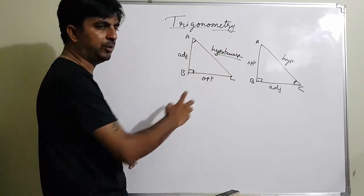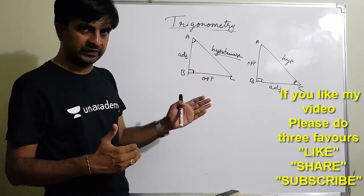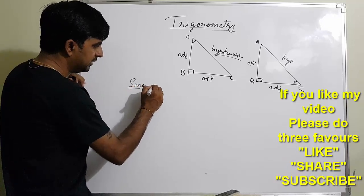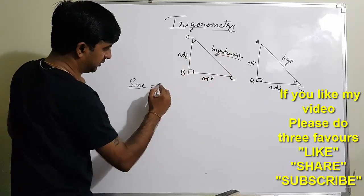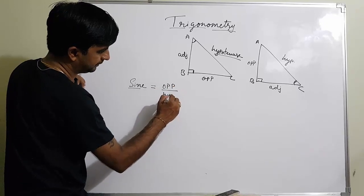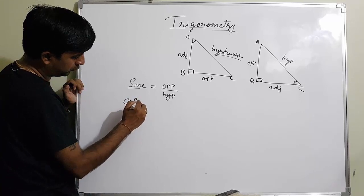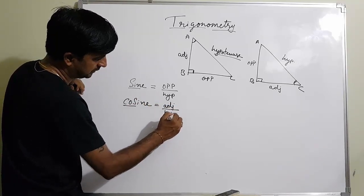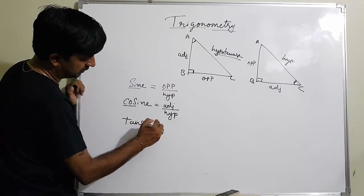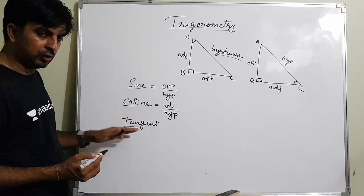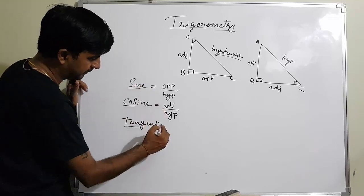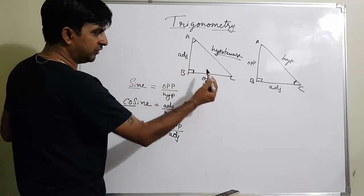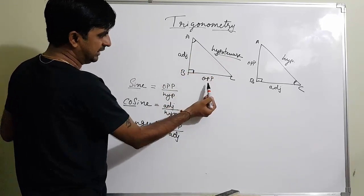They found out six ratios using this right angle triangle, which you need to memorize. The first is sine (sin): sine equals opposite divided by hypotenuse. The second is cosine (cos): cosine equals adjacent divided by hypotenuse. The third is tangent (tan): tangent equals opposite divided by adjacent. These are the first three ratios, found by dividing the respective sides.